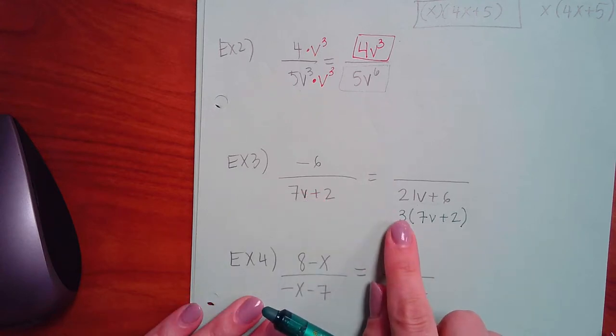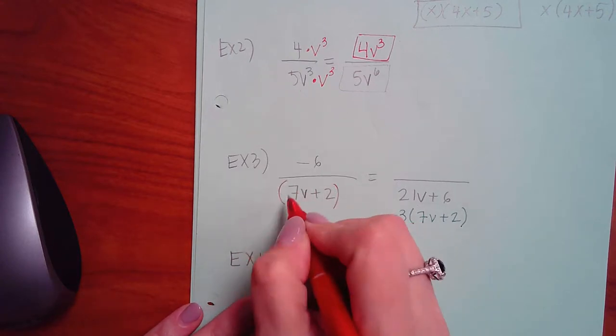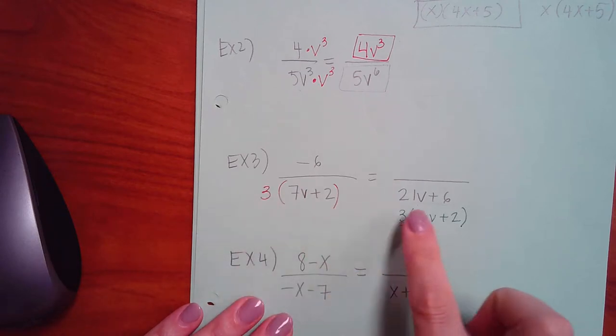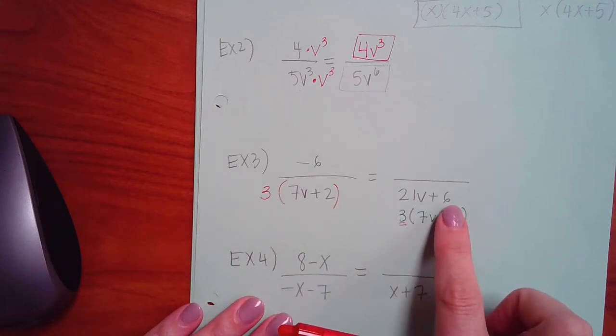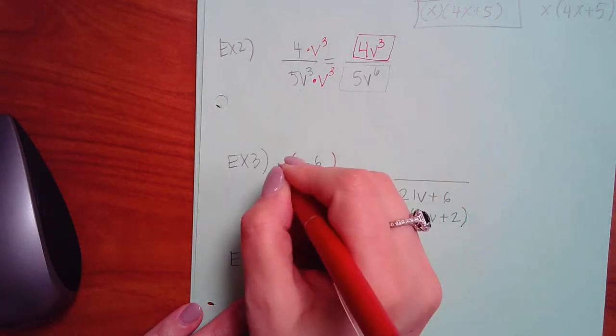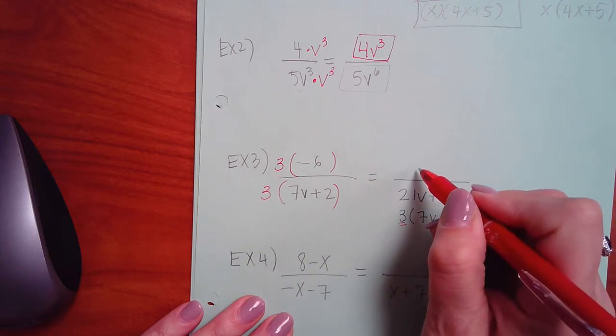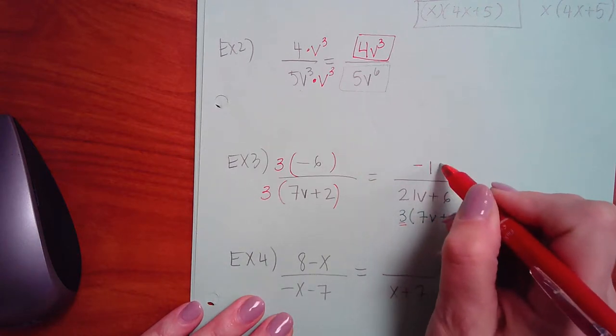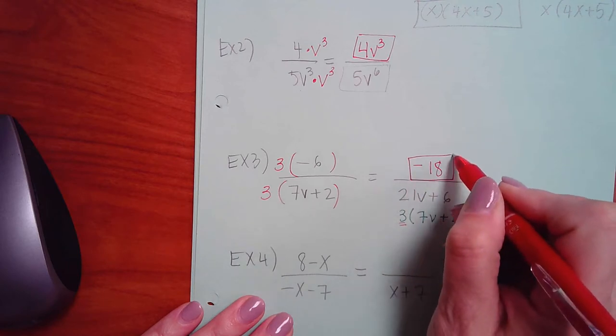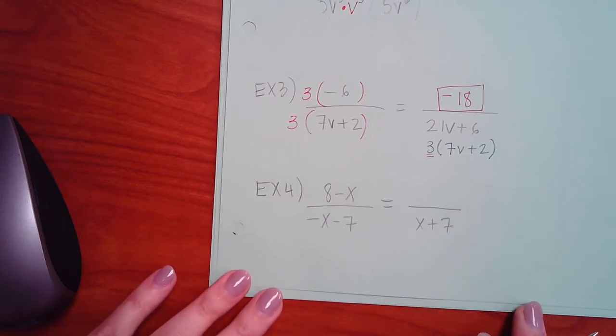What did they do to it? They multiplied it by 3. They took this whole thing and multiplied it by 3, and that's how they got 21v plus 6. So then that's exactly what I'm going to do to the top. But what do I get when I multiply 3 times negative 6? Negative 18. And so that's going to be the new numerator.